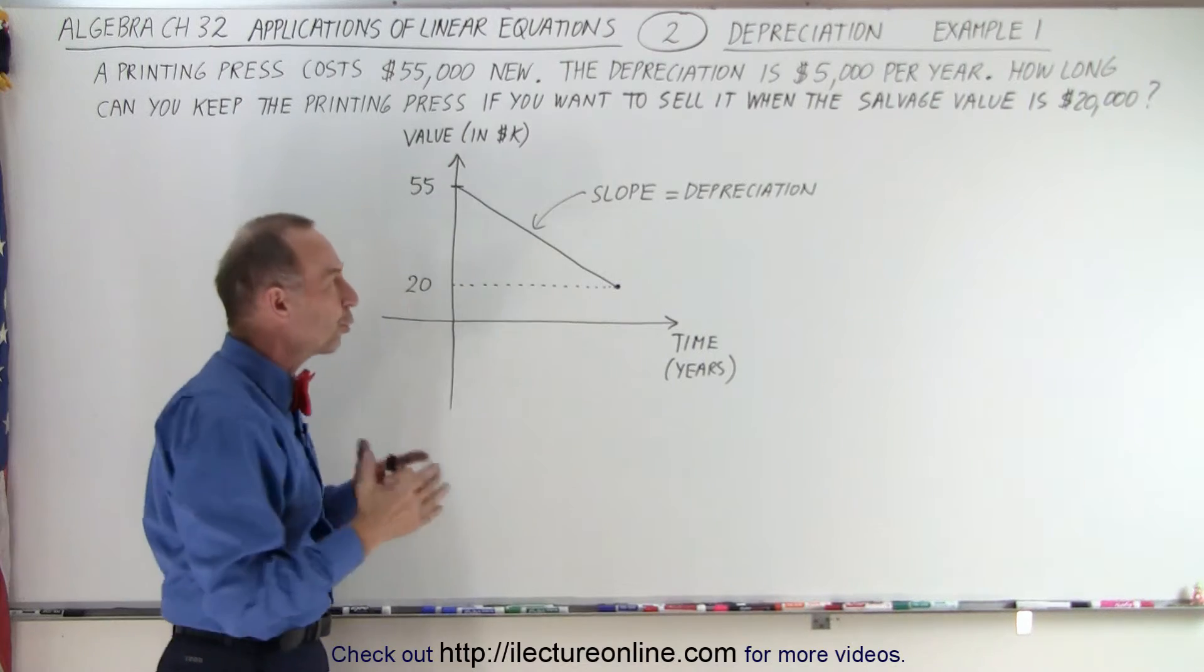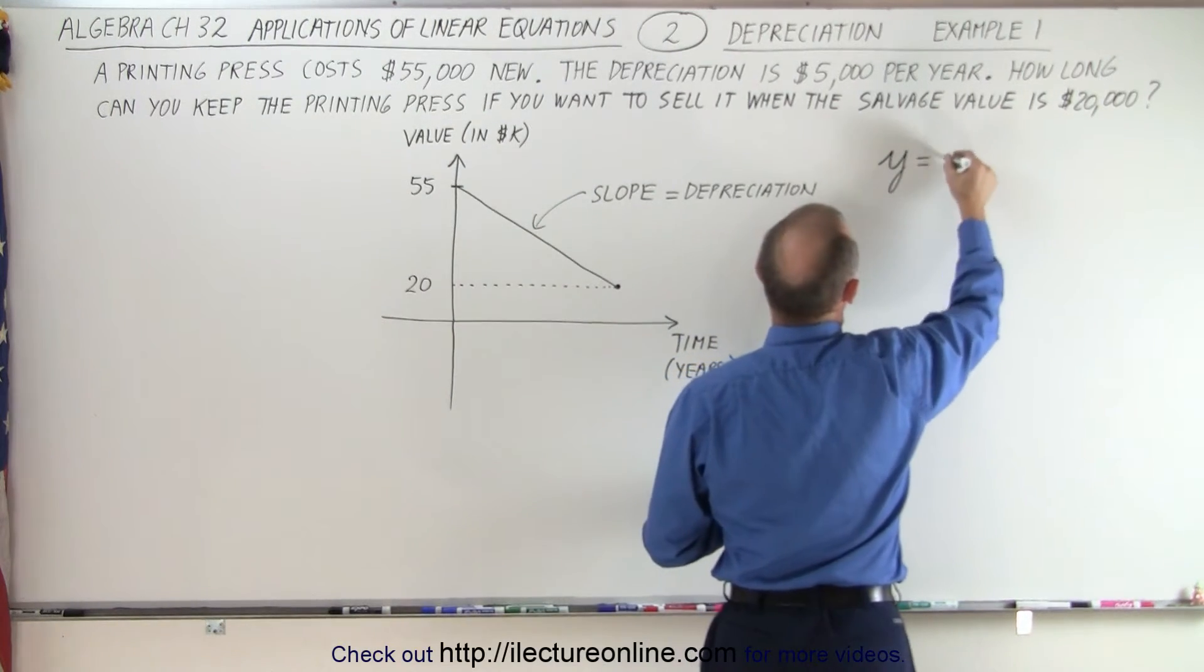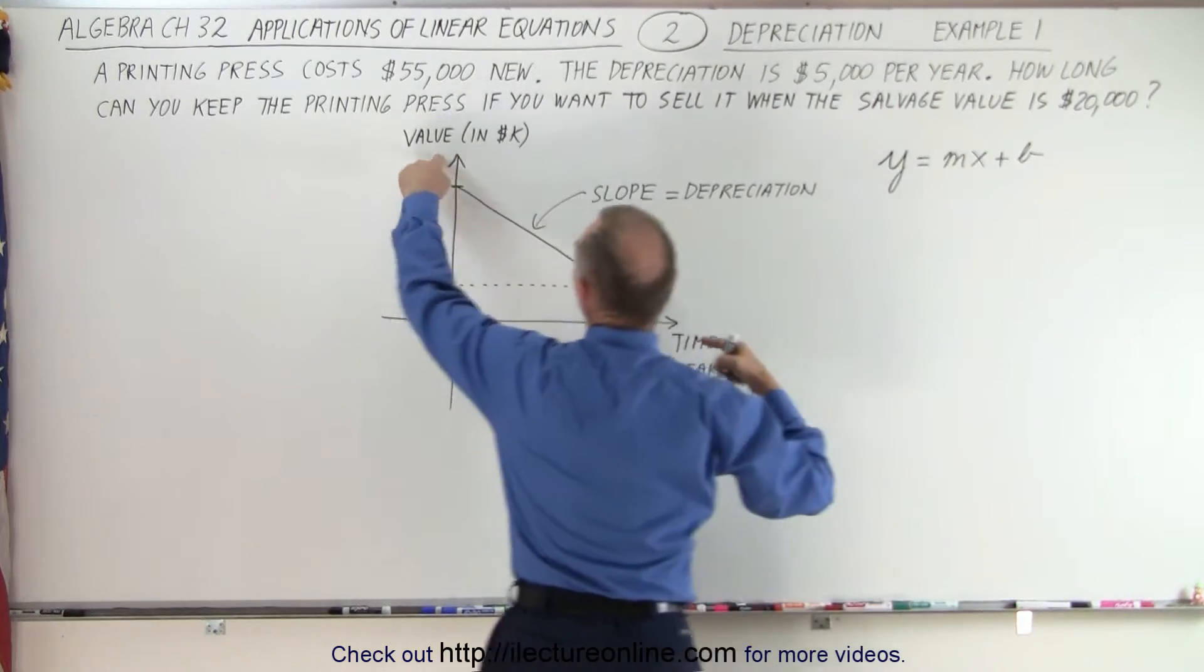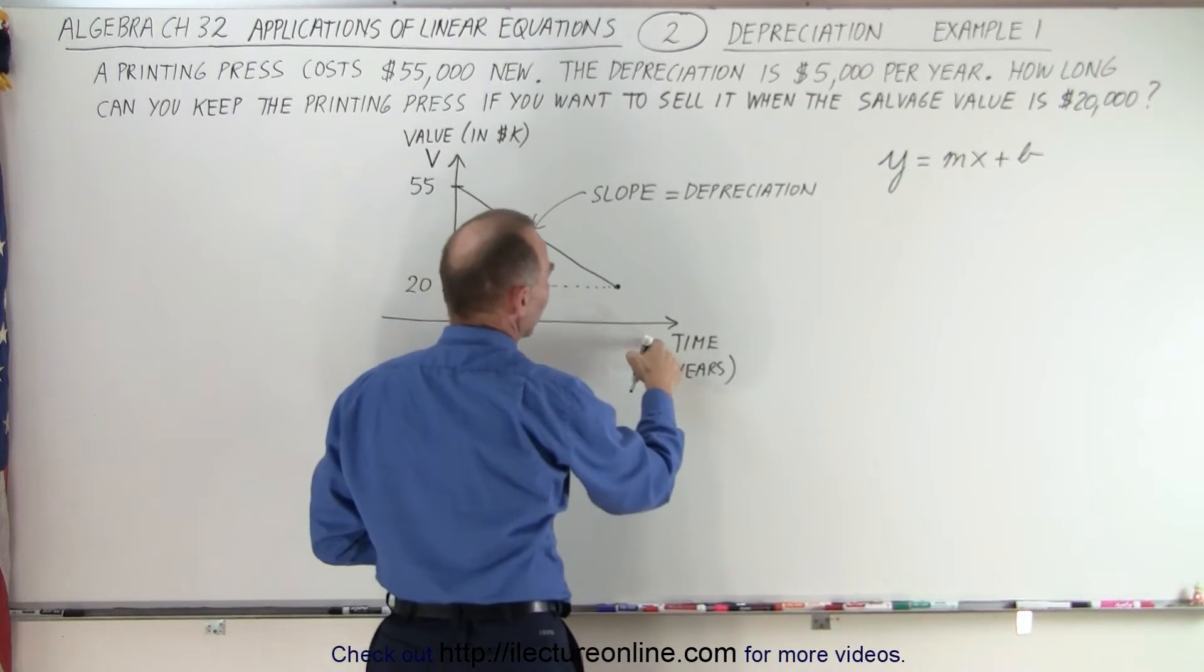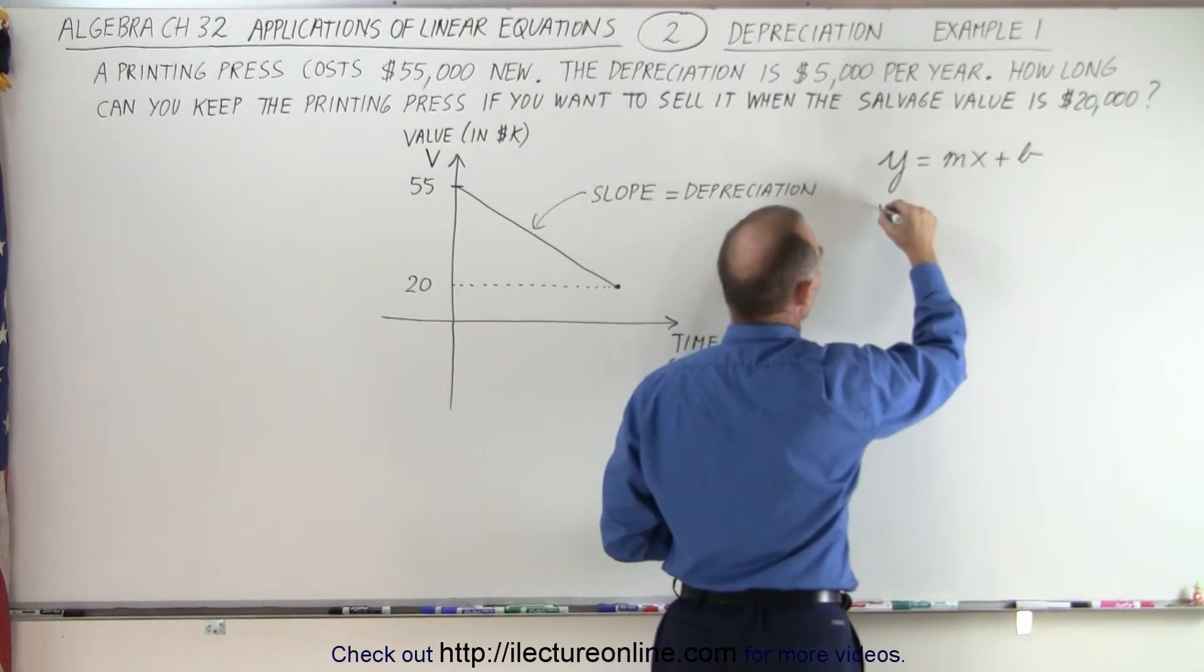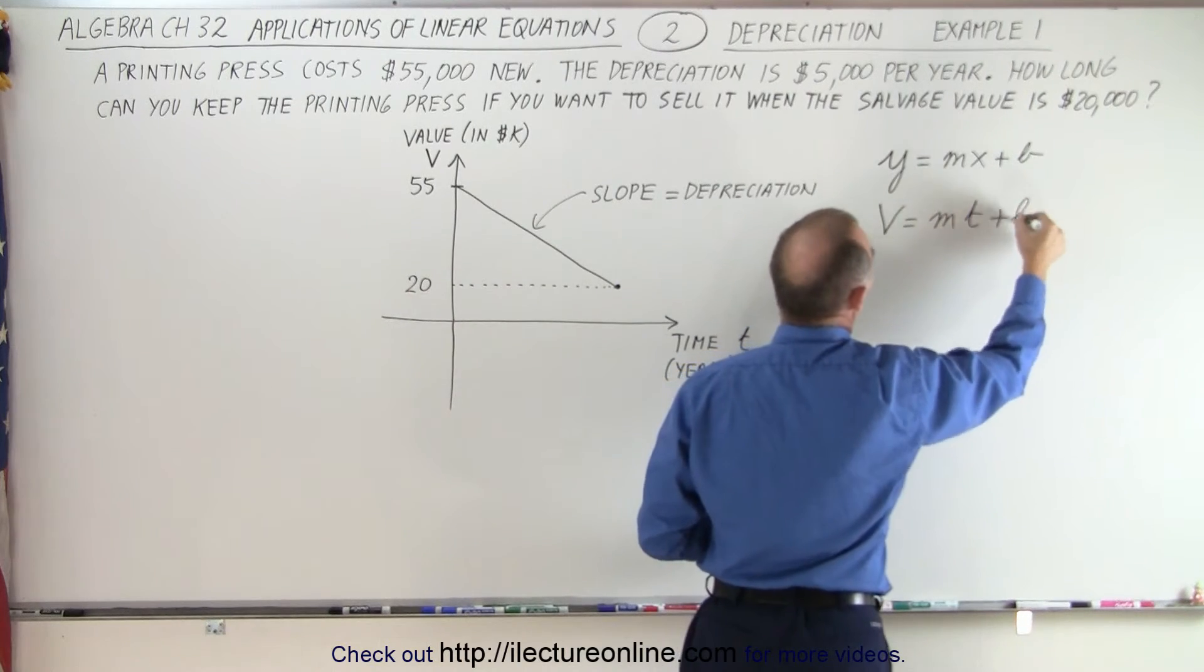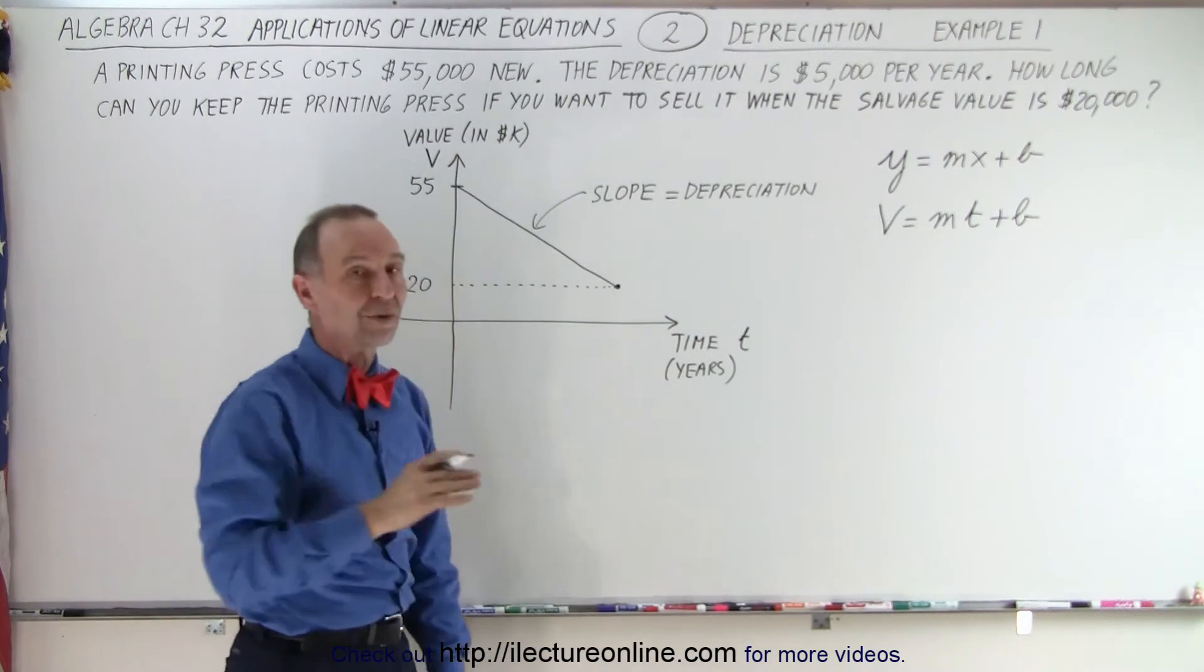So now let's compare that to the equation y equals mx plus b. But notice instead of y, we're going to have values. So we use the letter v for value. And here, instead of x, we're going to use the letter t. So instead of y, we're going to have v equals the slope m, and then the independent variable is t plus b. Now we need to decide what b and m represent.